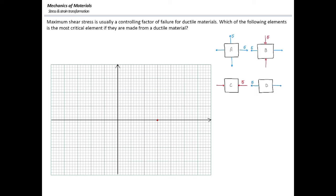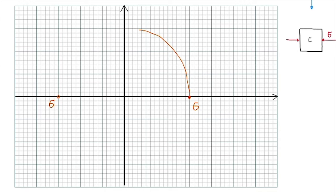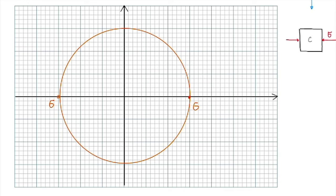Now let's talk about element B. In element B, there are the same magnitudes of stress, but one is positive and the other is negative, so the principal stresses are sigma and negative sigma — say, positive 15 and negative 15. Drawing a Mohr circle through these two points, the maximum shear stress equals the radius, which is sigma.